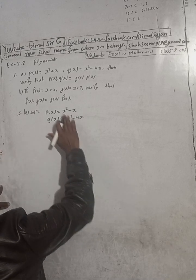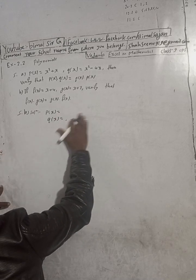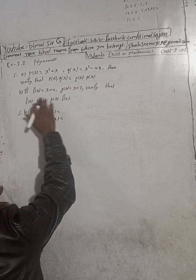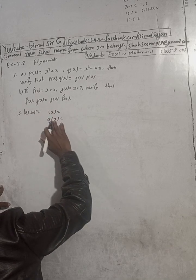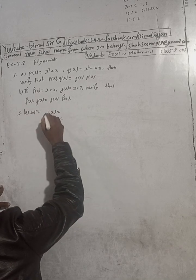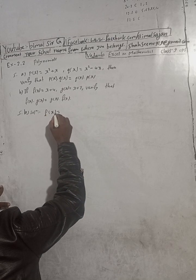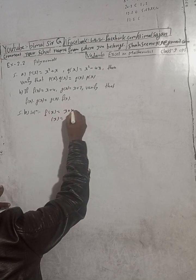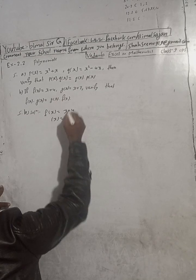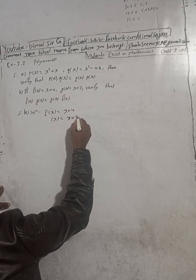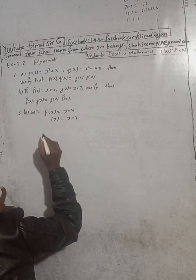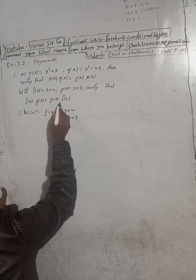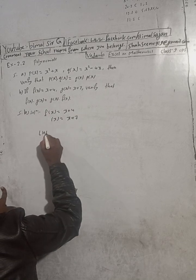Now for part B, number one: f(x) and g(x). f(x) is equal to x + 4, and g(x) is equal to x + 7. We need to verify f(x) into g(x).